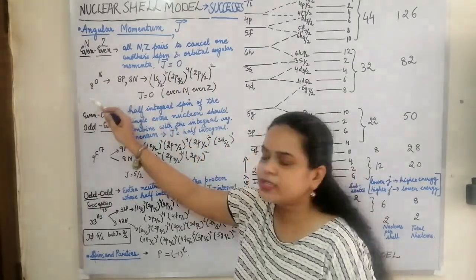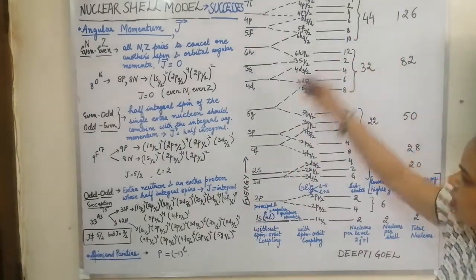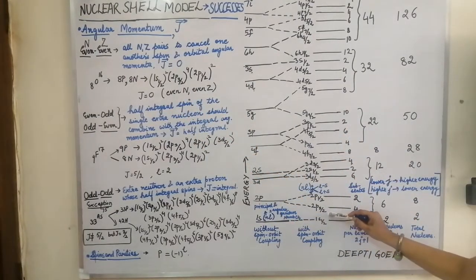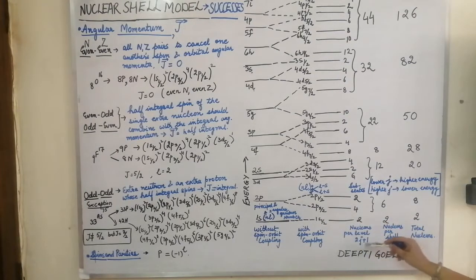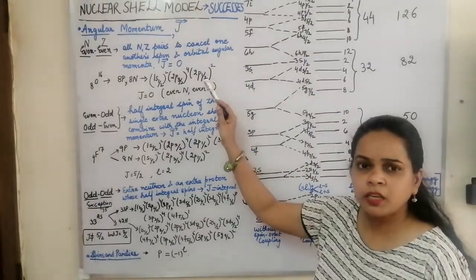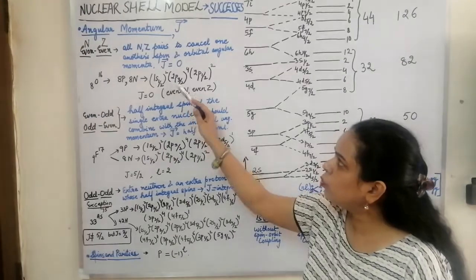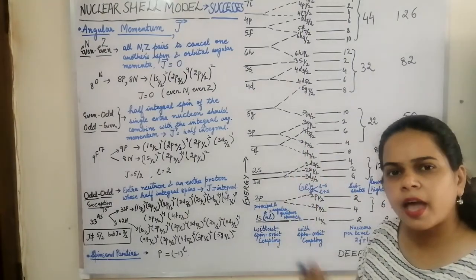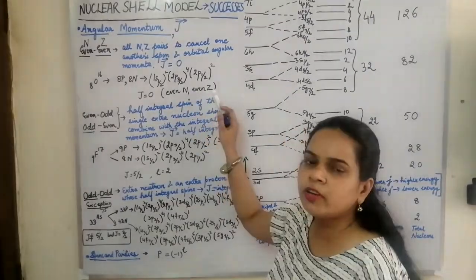In oxygen-16, the configuration is 1s½ (filled with 2), then 2p 3/2 (filled with 4), then 2p½ (filled with 2) — the subscript is the J value and the superscript is 2J+1. Both 8 protons and 8 neutrons have the same configuration: 1s½², 2p 3/2⁴, 2p½². All protons and neutrons pair off with opposite spins, so J = 0 for the even-even combination.